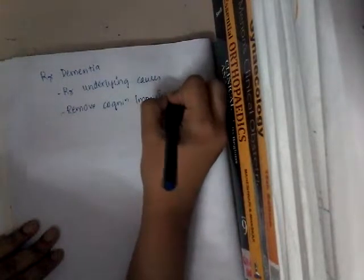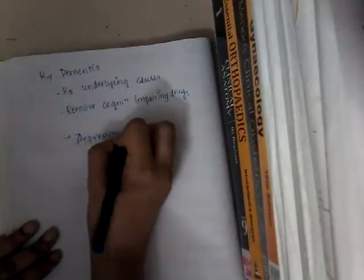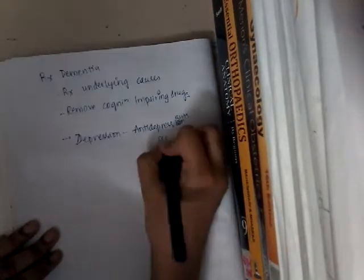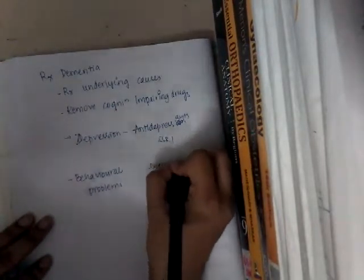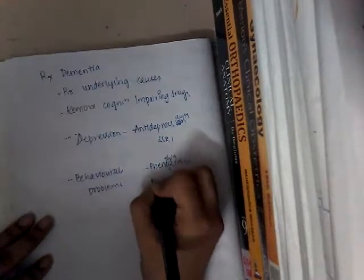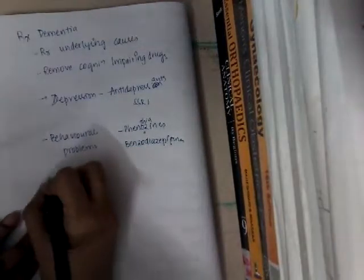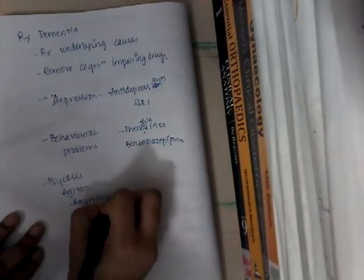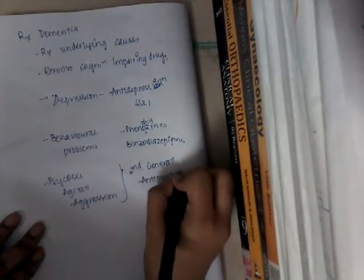If the patient has depression, give antidepressants — generally SSRIs are given. If they have behavioral problems, give phenothiazines and benzodiazepines. If the patient has psychosis, agitation, or aggression, you can give second-generation antipsychotics such as quetiapine.